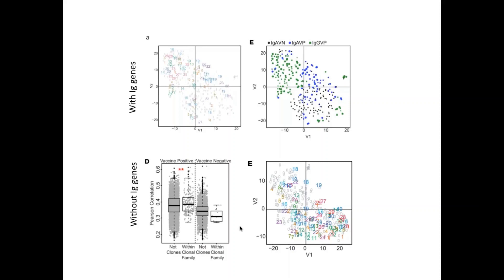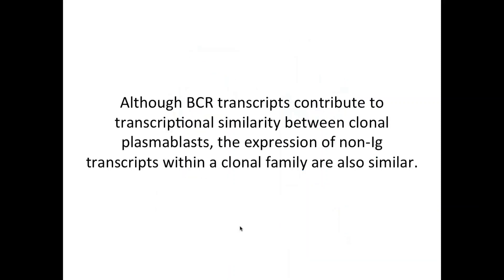The lower right corner shows a revised projection after removing immunoglobulin genes, which results in a slightly different data projection. Many scenarios still show cells from the same clonal family roughly correlating in the same neighborhood and geography. Overall, although BCR transcripts contribute to transcriptional similarity between clonal plasmablasts, the expression of non-Ig transcripts within a clonal family are also similar.